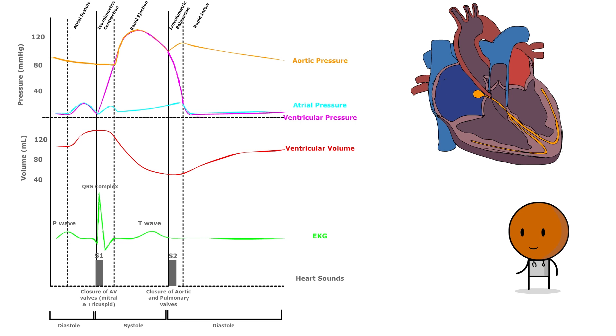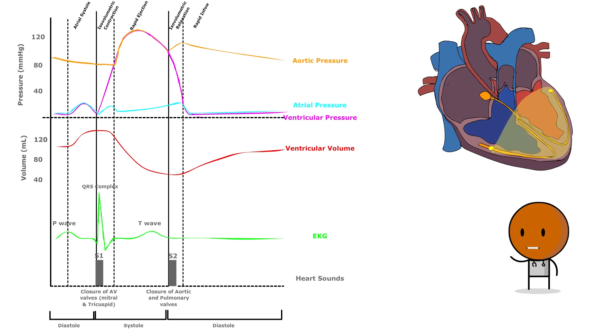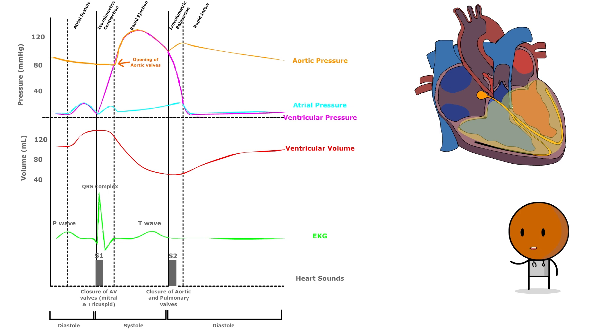We have the first phase, ventricular systole, or the ejection phase. As the left ventricle contracts, pressure within it rises sharply, exceeding the pressure in the aorta, leading to the opening of the aortic valve.